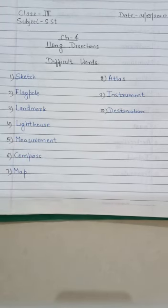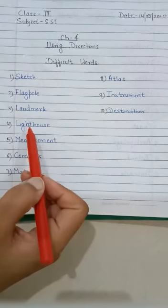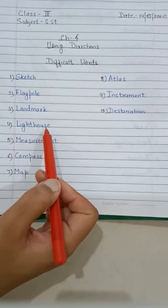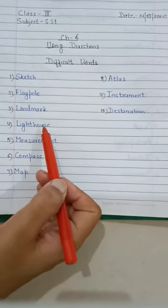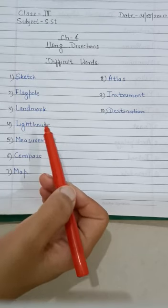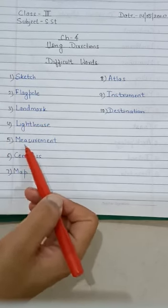The fourth word is lighthouse. L-I-G-H-T-H-O-U-S-E, lighthouse. Lighthouse is a tower which gives out light to guide ships at sea. The fifth word is measurement.